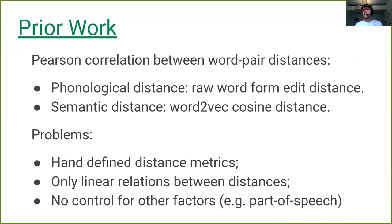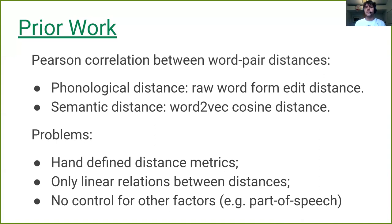For example, in Portuguese, all verbs in the infinitive form will end in AR, ER, or IR. If you're comparing verbs and nouns all together and take the Pearson correlation between the distances, you will find some kind of systematicity just because verbs look like verbs in Portuguese — which is arguably not as interesting as, for example, true nouns being similar because of the semantics they represent.